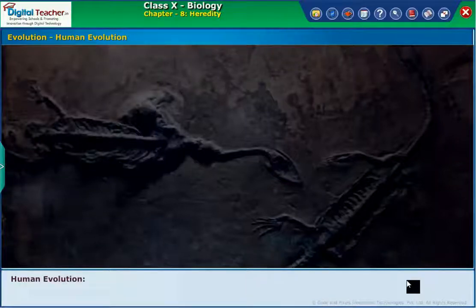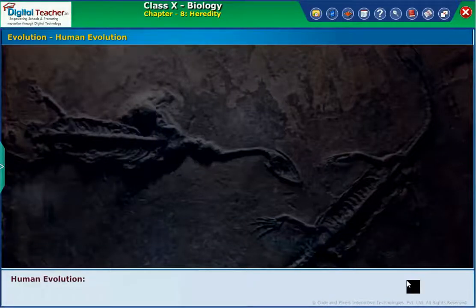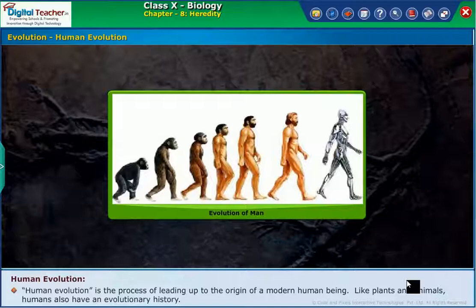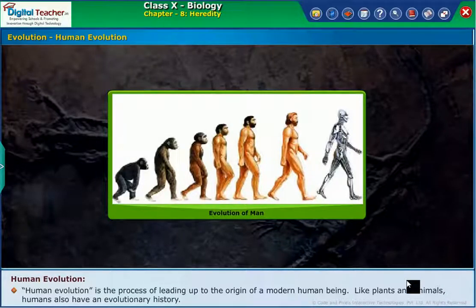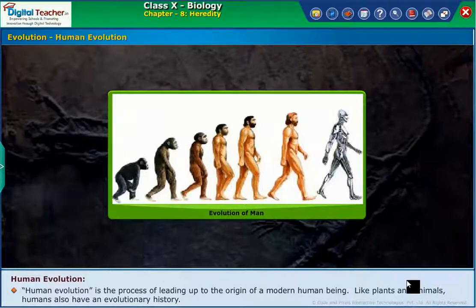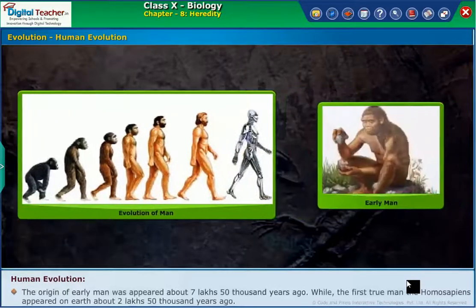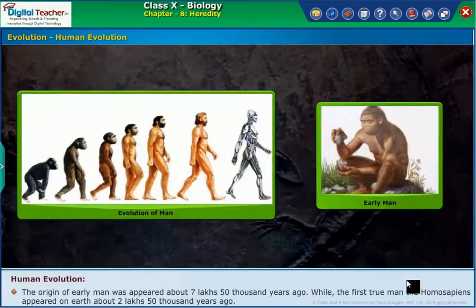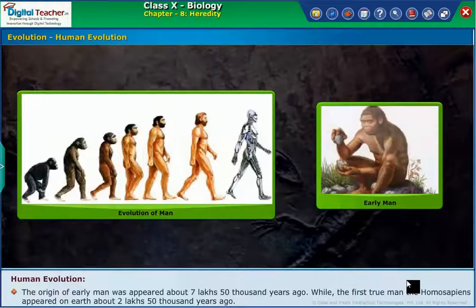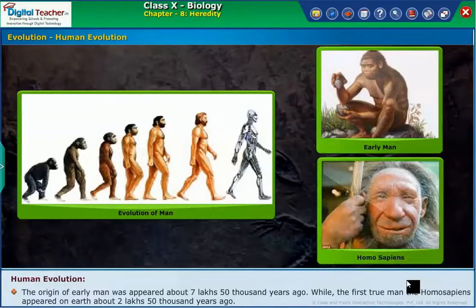Now let us learn about the evolution of humans. Human evolution is the process leading up to the origin of a modern human being. Like plants and animals, humans also have an evolutionary history. The origin of early man appeared about 750,000 years ago, while the first true man, the Homo sapiens, appeared on earth about 250,000 years ago.